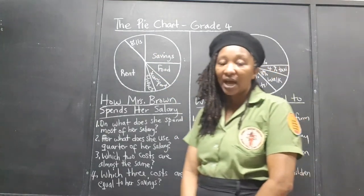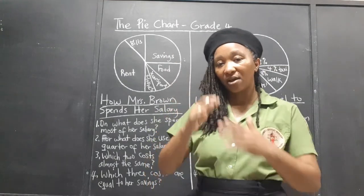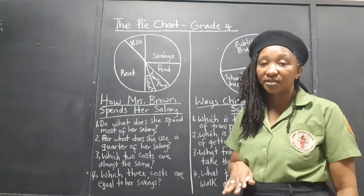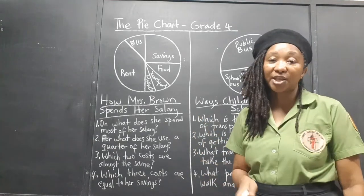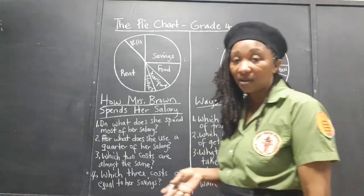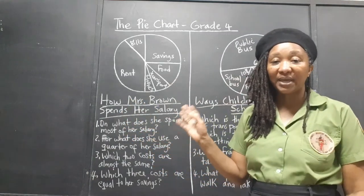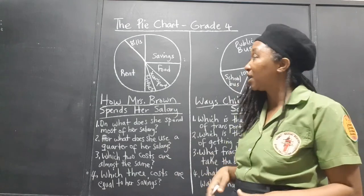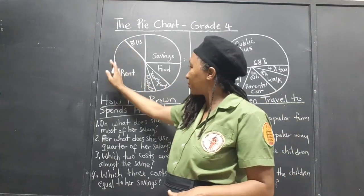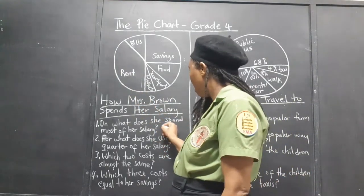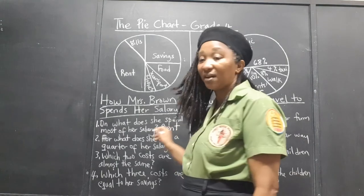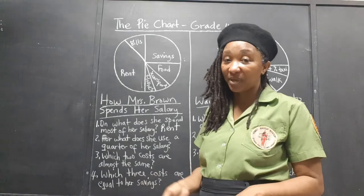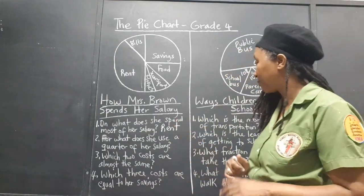Looking at the pie chart and how Mrs. Brown has decided to cut up her salary pie, let's answer the questions. On what does she spend most of her salary — which thing takes up the biggest chunk? Just looking at it, even though we're not given any actual numbers, we can see that rent takes up the biggest slice of the pie. Maybe Mrs. Brown lives in a very posh neighborhood where the rent is high.